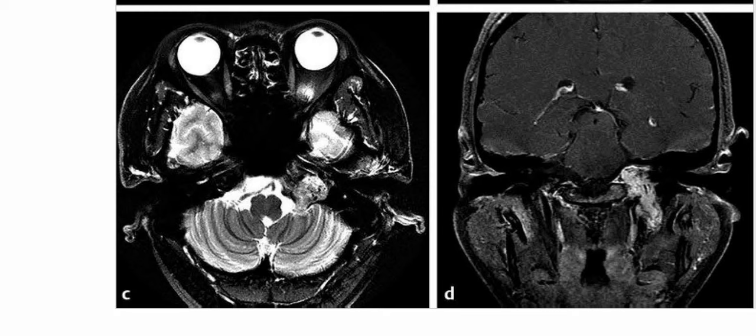The key finding is a jugular foramen mass. The diagnosis is glomus jugulare or paraganglioma, because it gives the typical salt and pepper appearance of paraganglioma.